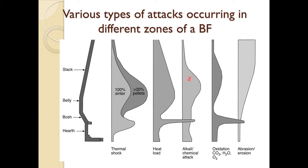Material can get stuck where scaffolding forms. It is very essential that alkali content is very low in the raw materials. Some alkali goes into the slag, very little into the iron, and some into the top gases.